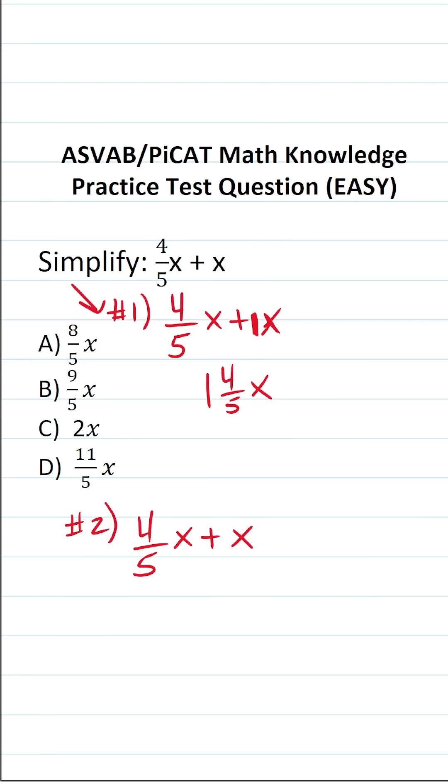We don't see this as an answer choice. That said, we can convert this mixed number here to an improper fraction pretty quickly. Again, our denominator of five is not going to change. One times five is five plus four is nine. So we can see that this is nine over five x, which is answer choice B.